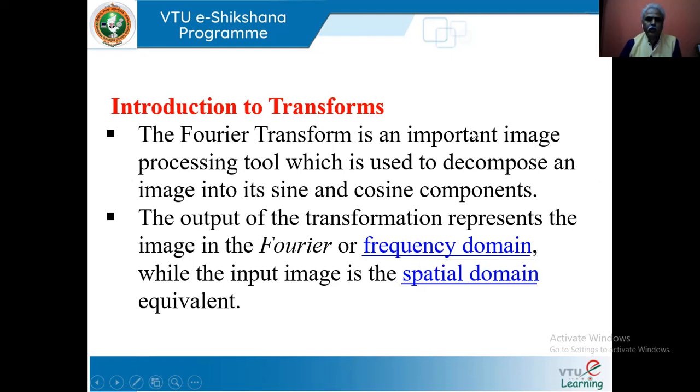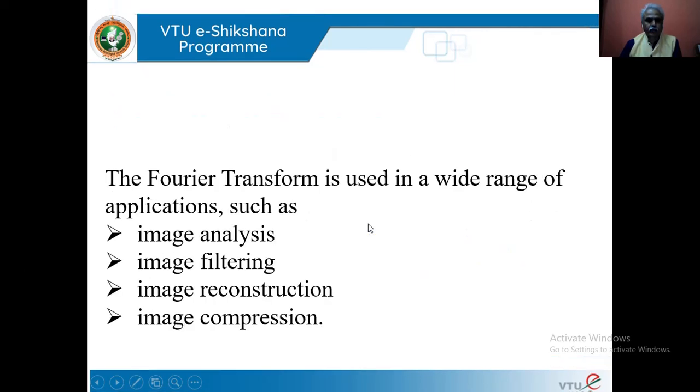The Fourier Transform is an important image processing tool which is used to decompose an image into its sine and cosine components. The output of the transformation represents the image in Fourier or frequency domain, and the input image is a spatial domain equivalent. The Fourier Transform is used in applications such as image analysis, filtering, reconstruction, and compression.